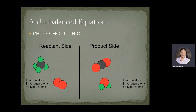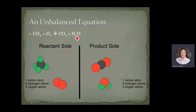This is an example of an unbalanced equation — the combustion of methane, which produces carbon dioxide and water. Checking the number of atoms on each side: in the reactant side we have one atom of carbon, four atoms of hydrogen, and two atoms of oxygen. In the product side we have one atom of carbon, two atoms of hydrogen, and two plus one equals three atoms of oxygen. The hydrogen and oxygen atoms are not balanced, so this is an unbalanced equation.